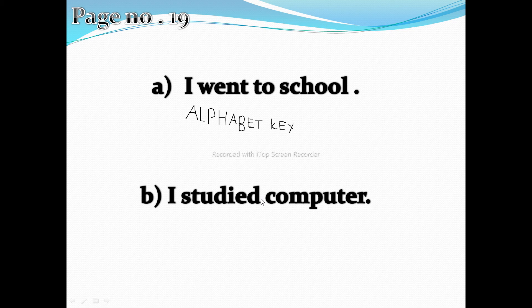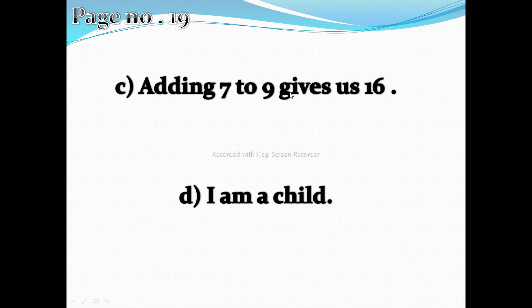Next: 'Adding seven to nine gives us 16.' Here we can see alphabet keys, and number keys — seven, nine, and 16 are number keys — and spaces in between. So the answer will be alphabet keys, number keys, and spacebar key. Next: 'I am a child' — again a simple English sentence using just alphabet keys and spacebar key. Don't worry, I'll share this exercise with you by screenshot on mobile so you may write the answers.